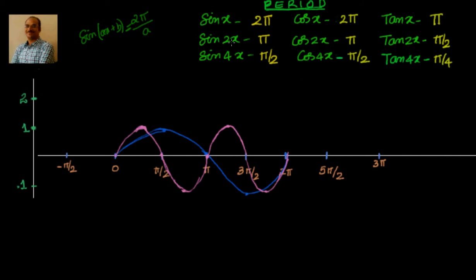For example, sin(x) has period 2π. If you want to find the period of sin(2x), since the coefficient went from 1 to 2, the period goes down by 2 — so 2π becomes π. If you multiply the coefficient and the period together, you always get a constant.